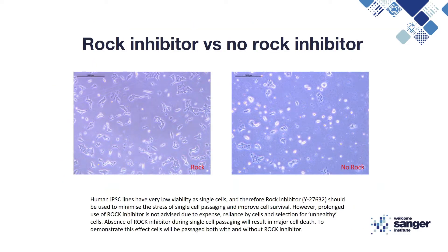Rock inhibitor is extremely important for single cell passaging of iPSCs as they have very low viability as single cells. However, it should not be used for prolonged periods as the cells may become reliant on it, which can lead to the selection for unhealthy iPSCs. Absence of rock inhibitor can result in high levels of cell death. This will be demonstrated by passaging both with and without rock inhibitor.